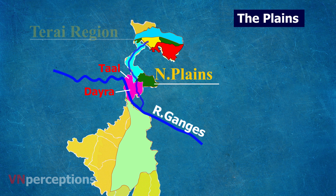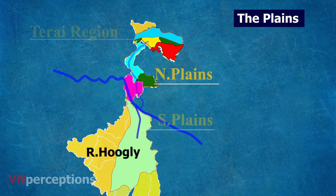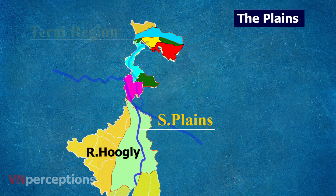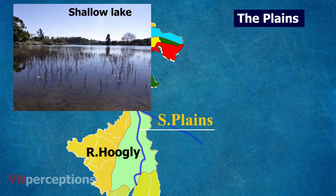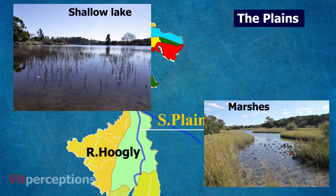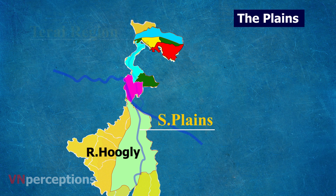The western plain has been largely built up by the silt brought by the western tributaries of the Bhagirathi river. Southern plains lie between the Bhagirathi-Hooghly and the Bangladesh border. These areas are characterized by shallow lakes, marshes and river courses. Plain areas are very fertile for agricultural purposes, and most of the food crops are grown in these plains.